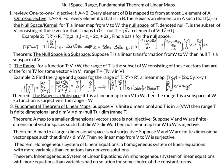We want to see what vectors (Z1, Z2, Z3) get mapped to the zero vector. Setting this equal to zero, the condition is Z1 must equal minus 2Z2 minus 3Z3. So the null space consists of vectors where the first coordinate equals minus 2Z2 minus 3Z3 and the second and third coordinates are Z2 and Z3. Breaking this into a linear combination gives bases vectors (−2, 1, 0) and (−3, 0, 1).